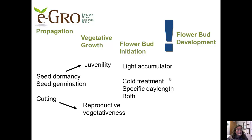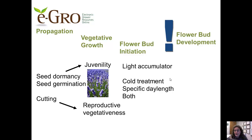Let me define juvenility: it's when plants must attain a certain size before they're able to initiate flowers. As an example, lavender needs to have 40 to 50 leaves prior to beginning a cold treatment. The cold treatment is necessary for flower bud initiation, the next stage of development. There are different cultural inputs into accomplishing flower bud initiation, like a cold treatment or a specific day length for photoperiodic crops, or both in some cases.